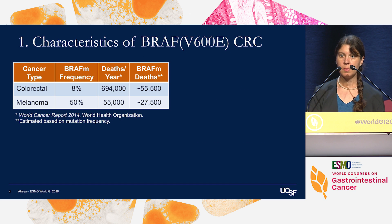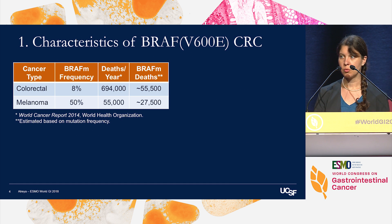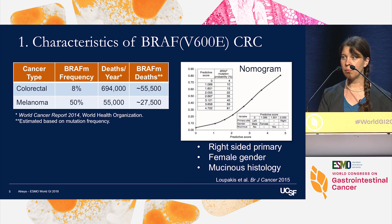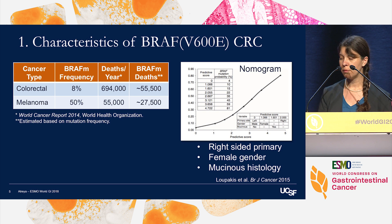To begin, because colorectal cancer is so common, it is estimated that more patients with BRAF-mutated colorectal cancer versus melanoma die worldwide each year. The features most predictive of a BRAF V600E mutation are a right-sided colon primary, female gender, and mucinous histology.